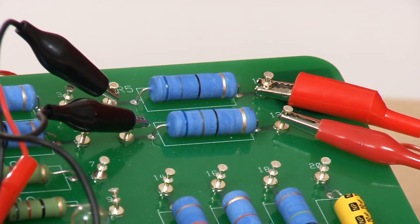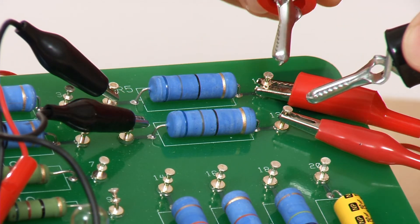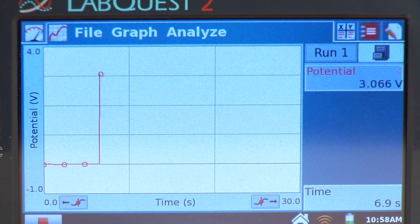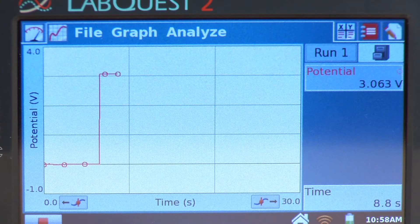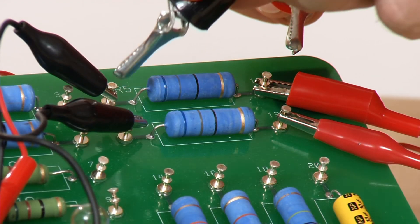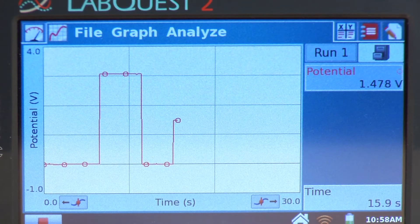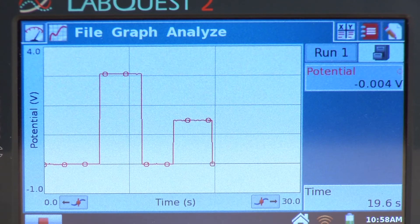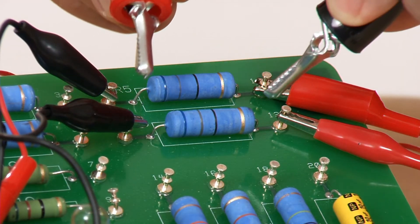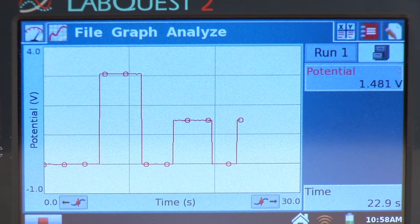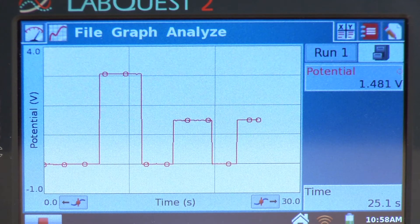Now I'm going to measure the potential across the total circuit. Then I'm going to move to where I measure the potential across one of the resistors. Then I'm going to take it off and switch it to the other resistor, and then take it off completely.